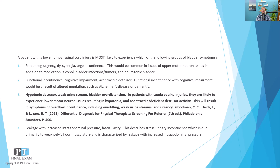Finally, leakage with increased intra-abdominal pressure or fascial laxity would be stress urinary incontinence, primarily due to weak pelvic floor musculature or pelvic floor trauma — for example, post-childbirth fascial laxity — resulting in involuntary urine leakage with increased intra-abdominal pressure like a cough, laugh, or sneeze. In this case, the patient with a lower lumbar spinal cord injury is most likely to exhibit overflow incontinence because of the hypotonic or acontractile detrusor muscle.